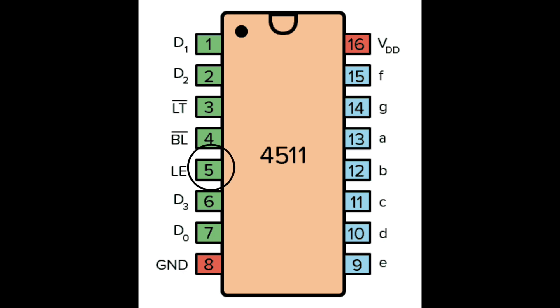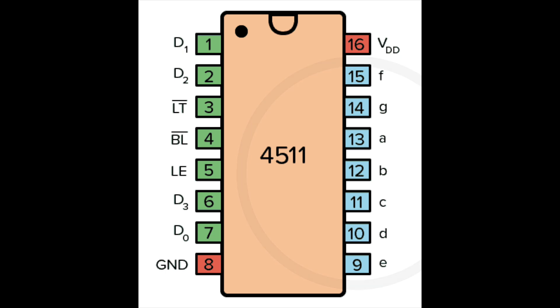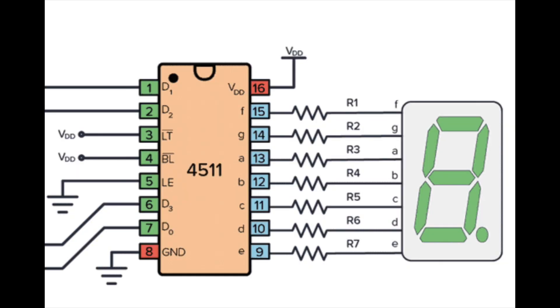Pin 5 is the store input pin, which should also be low. When high, the display number remains constant despite changes made to the inputs. The outputs A to G correspond to specific segments on the display. These outputs become high based on the BCD values presented.